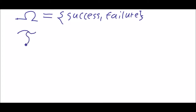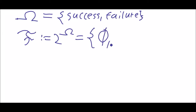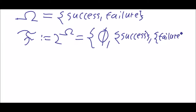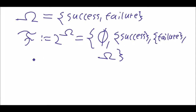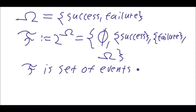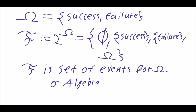We also have another set: the set of all subsets of Omega, sometimes written as 2 to the Omega. It contains the empty set, the event success, the event failure, and Omega itself. The members of this set F are called events, so F is the set of events of Omega — and it is also a sigma algebra of the events of Omega.